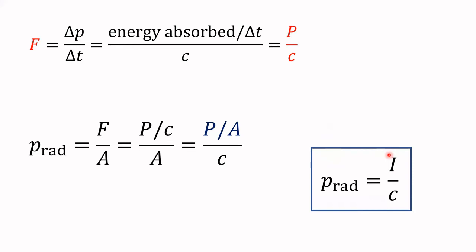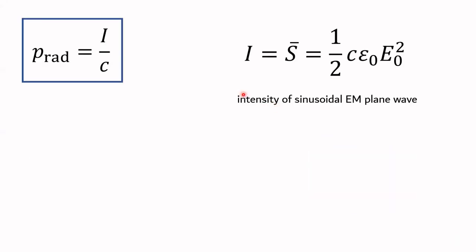It kind of makes sense intuitively, right? I mean, the more intense the wave is, the more pressure it should be able to apply to something if light can apply a pressure. And the speed of light, C, we'll see, makes the units all work out. You could look at the units of intensity and the units of speed and you would get the correct units. That's really what we did here, right? Just in the reverse order.